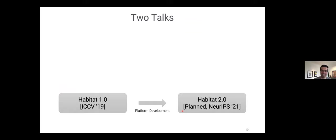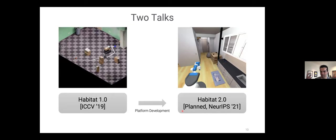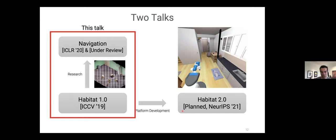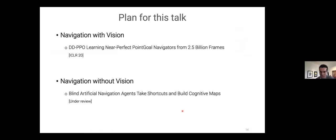I have two talks. I'm only giving one of them here. One is talking about the transition from Habitat 1.0 to Habitat 2.0, which is about interactive agents. I'm not talking about that here. What I'm talking about is how do we use navigation-based simulation for navigation research?